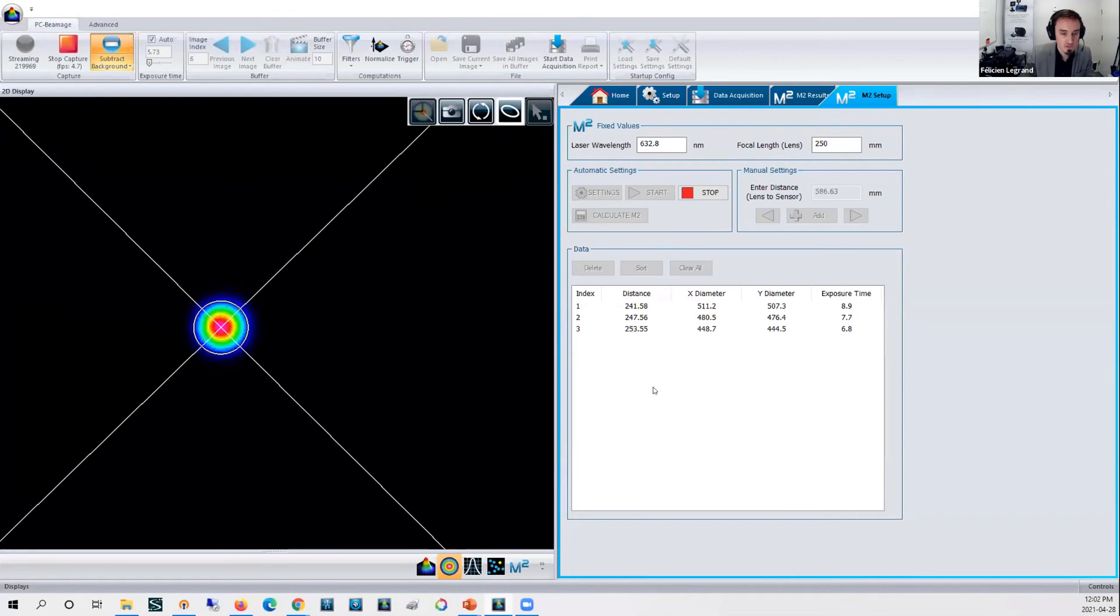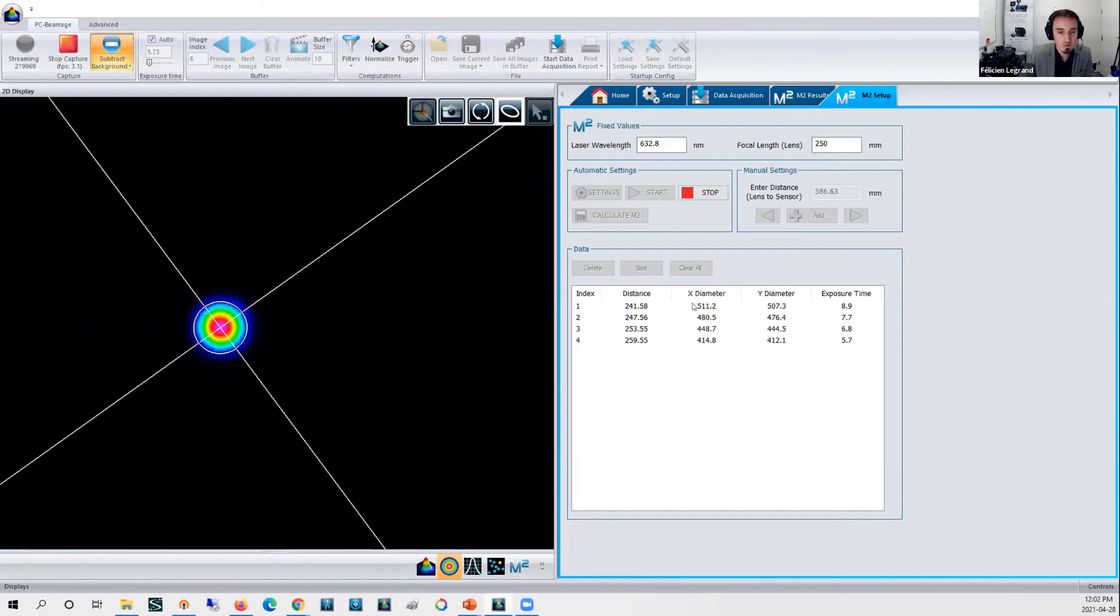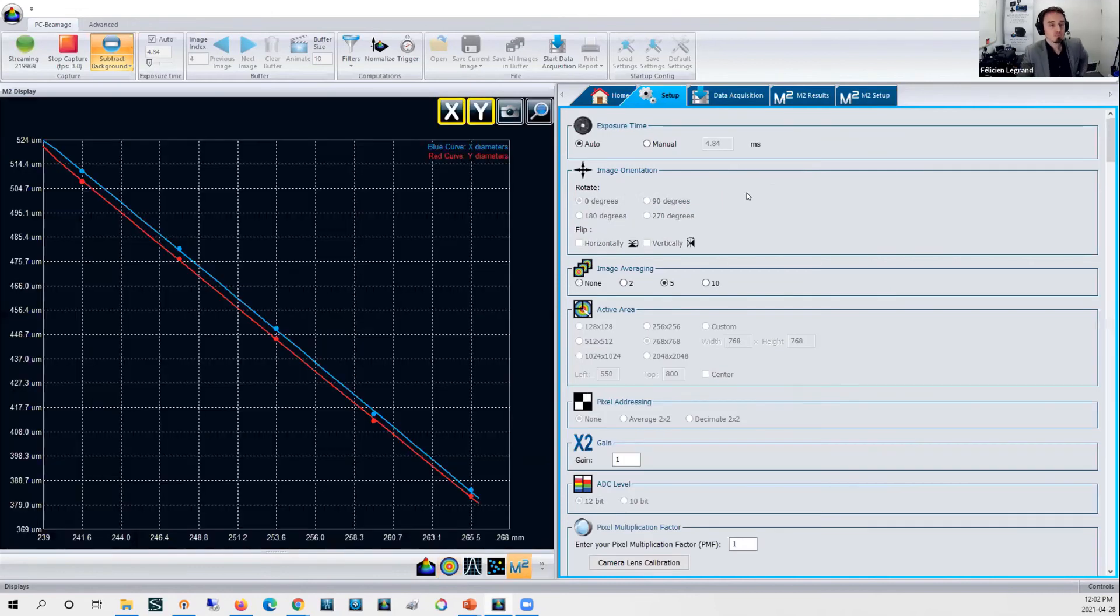I will use this time here to show you a little bit of the interface there. Once again, measuring those beam diameters at different positions along the z-axis, X and Y measurement, and the exposure time required. So why don't we go to the setup button here. It is showing you that the software is automatically set to auto exposure time mode, some image orientation options, they are not useful here.